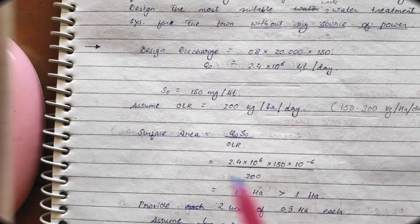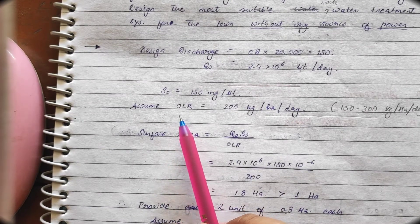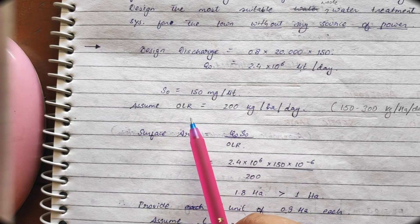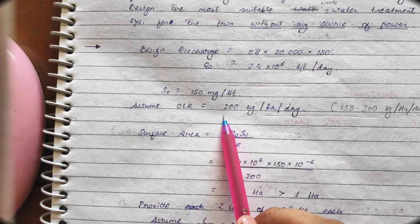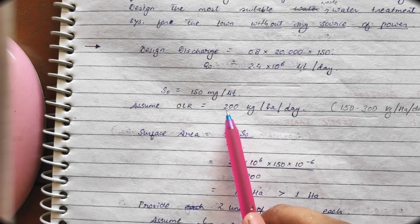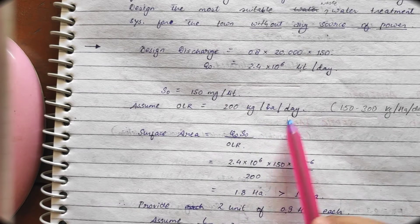Now, one parameter we have to assume that is the organic loading rate. We have seen that the organic loading rate depends upon the temperature. Now, according to Indian scenario, how much is the organic loading rate? We have to consider that is the 200 kg per hectares per day.